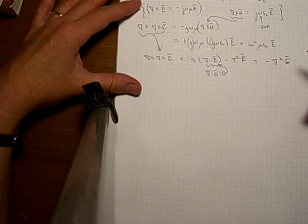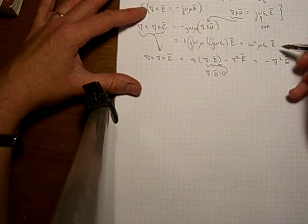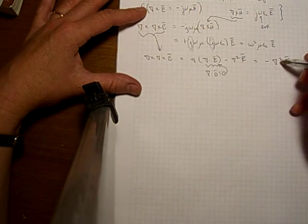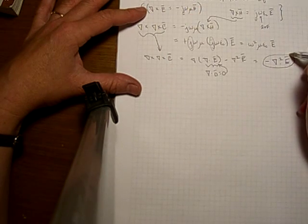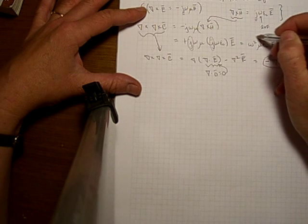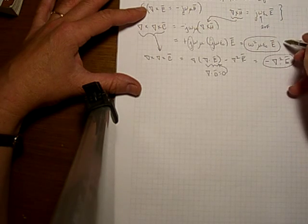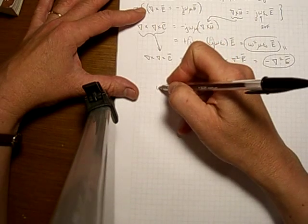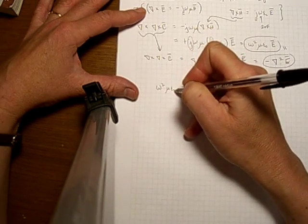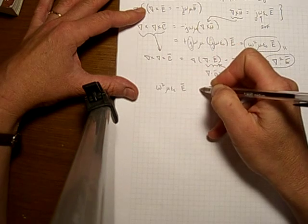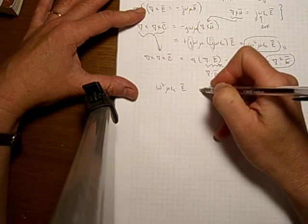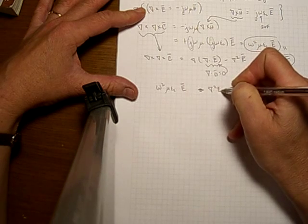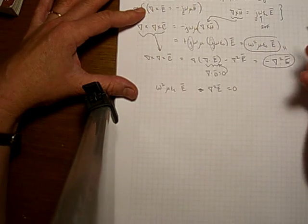So let's combine these two sides. Now we can see that this is equal to the Laplacian of the electric field. And the right hand side was equal to omega squared mu epsilon c. So these two are equal to each other. So we have omega squared mu complex epsilon times the electric field minus the Laplacian of the electric field is equal to zero.